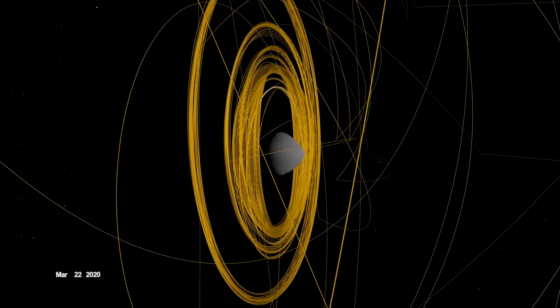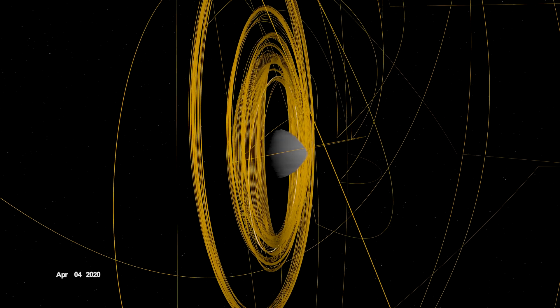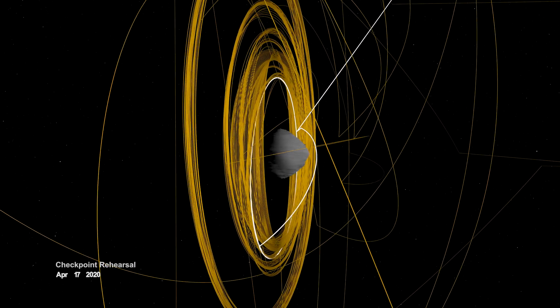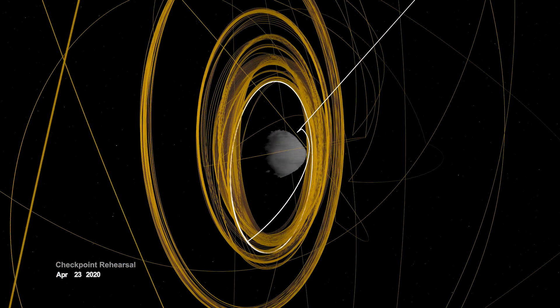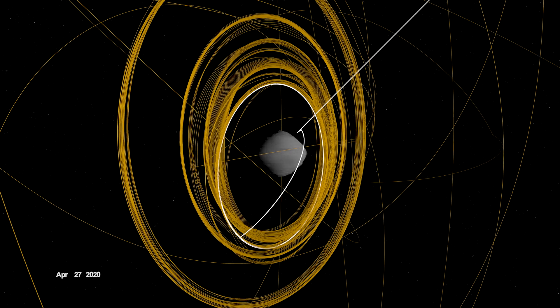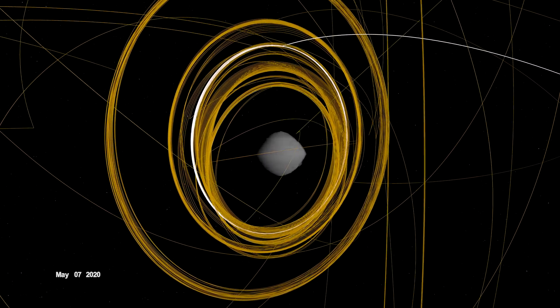In mid-April, OSIRIS-REx performed the first of two rehearsals prior to sample collection. It navigated to a predetermined checkpoint about 125 meters above Bennu, then descended to within 65 meters before backing away.